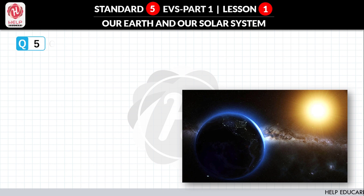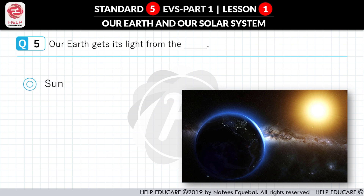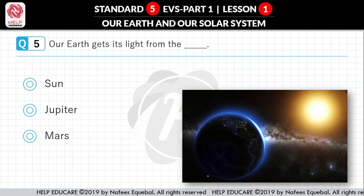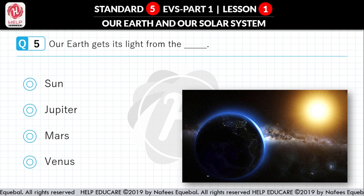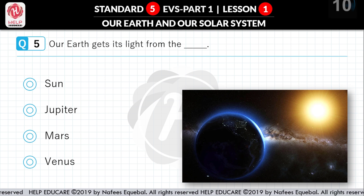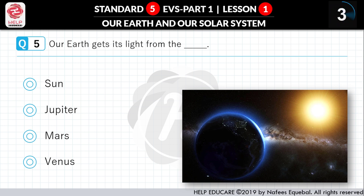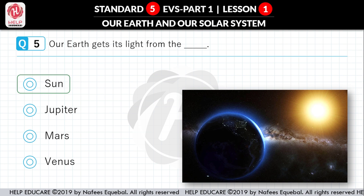Question No. 5: Our Earth gets its light from the dash. First option: Sun. Second option: Jupiter. Third option: Mars. Fourth option: Venus. Correct answer is Sun.